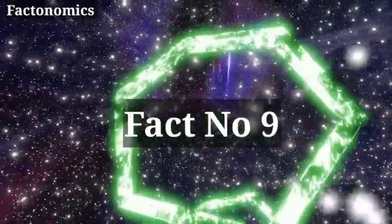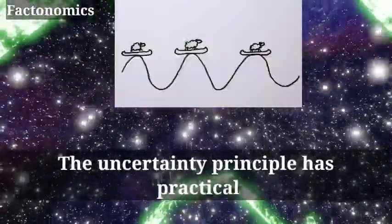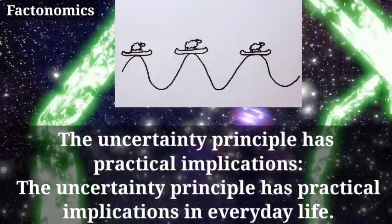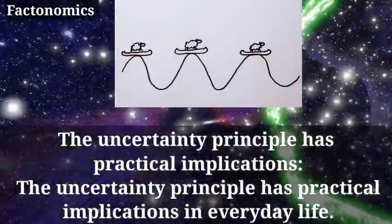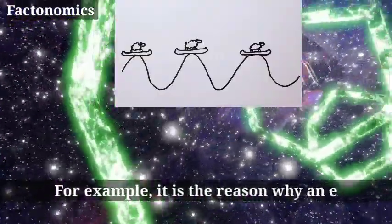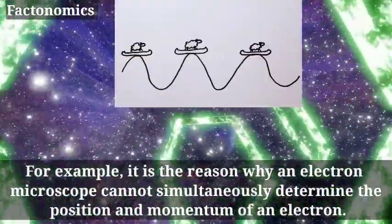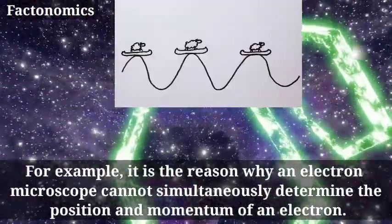Fact number 9. The Uncertainty Principle has Practical Implications. The uncertainty principle has practical implications in everyday life. For example, it is the reason why an electron microscope cannot simultaneously determine the position and momentum of an electron.